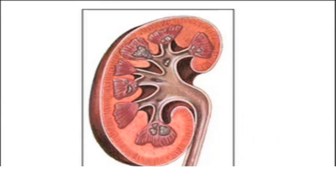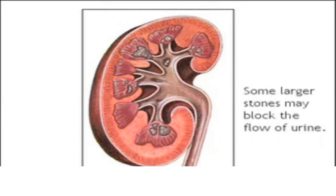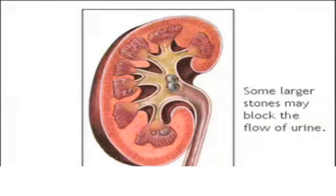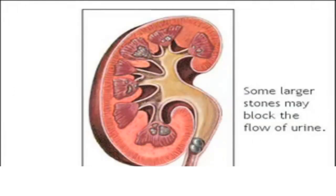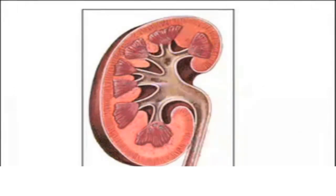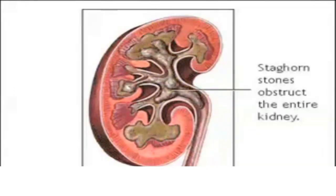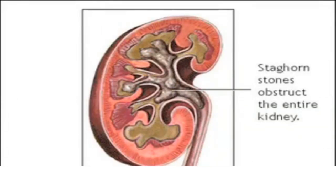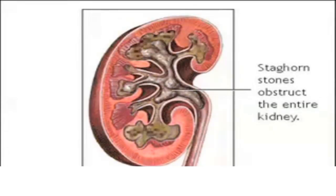However, stones can become more problematic when they block the flow of urine, as seen in the example here. Doctors call this one a staghorn kidney stone, and it is obstructing the entire kidney. Fortunately, these stones are the exception rather than the rule.